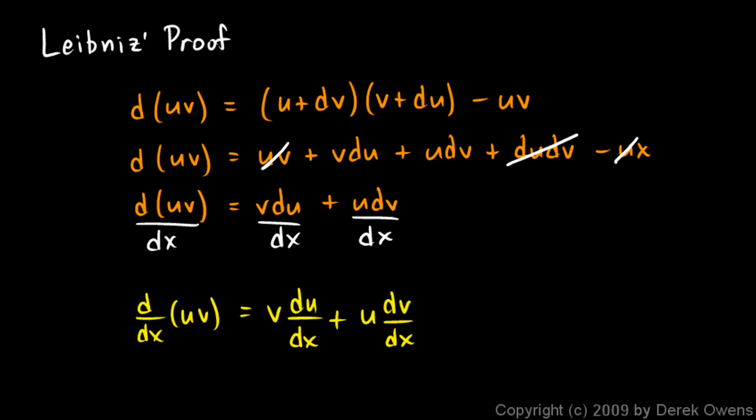So the way Leibniz wrote it is almost identical to the way we write it today. And in fact, this notation, the differential notation using a lowercase d and these little quantities to represent these infinitely small quantities, that comes from Leibniz. And you see him employing that notation here.